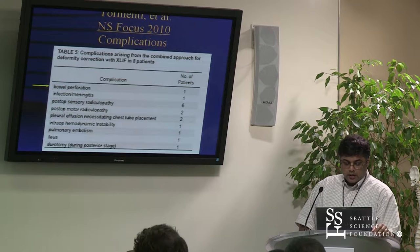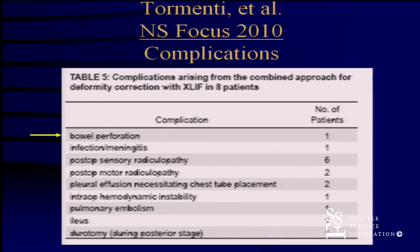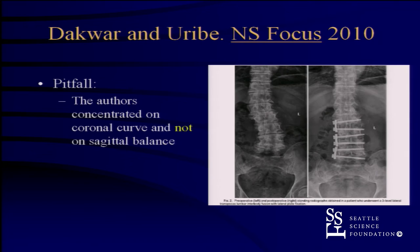These are the other complications common with lateral approaches: some sensory radiculopathy, some motor radiculopathy. A lot of these do resolve — that's true — but you've got to tell patients about it beforehand that they might wake up with a numb thigh. It's probably going to get better. This was Juan's picture from his article — he did a beautiful job taking a rotational, relatively mild to moderate curve and doing it all anteriorly to straighten it out.